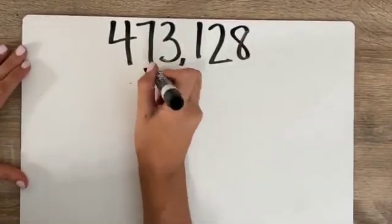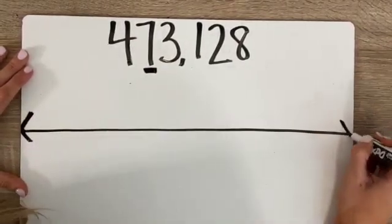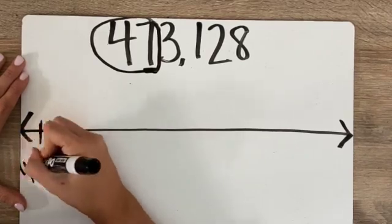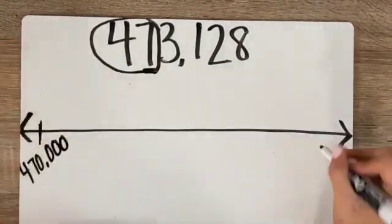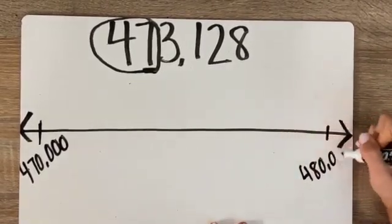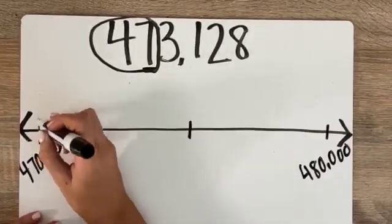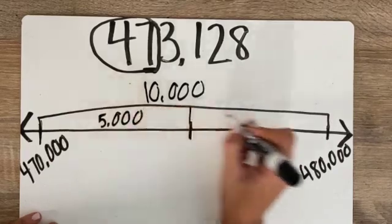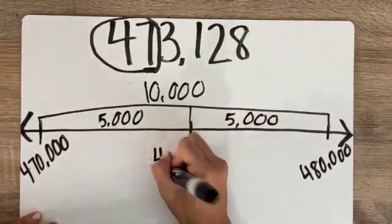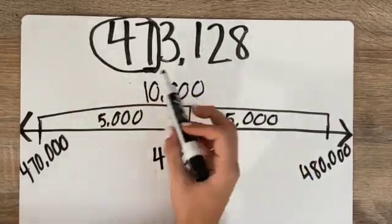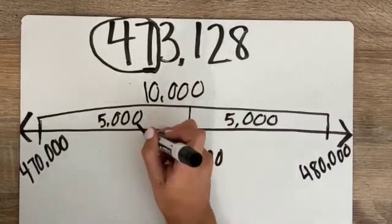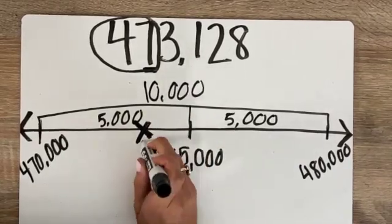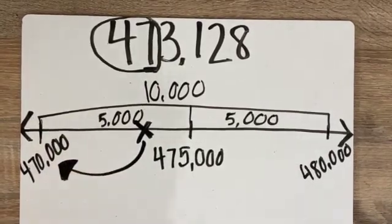473,128 — round to the nearest 10,000. I say, how many 10,000s do I have? I have 47 of those, so 470,000. If I had one more 10,000, that would be 480,000. Because this difference is 10,000 and each half is worth 5,000, my midpoint is 475,000. Now I look at 473,128 — it's somewhere over here because it's less than 475,000. So 473,128 rounds down to 470,000 when rounding to the nearest 10,000.